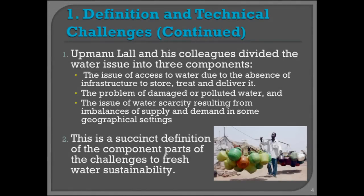Here at Columbia, the head of our water center is an engineer, an Earth Institute faculty member named Manu Lau, and he and his colleagues have divided the water issue into three components. It's useful to think about water the way that Manu thinks about it. First is the issue of access to water. There can be water everywhere, but not a drop to drink. There's plenty of water, but you need infrastructure to store it, to treat it, and to deliver it, to bring it to people's homes and to their farms.